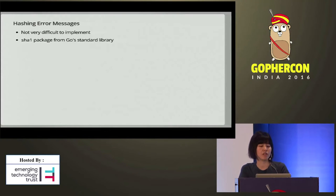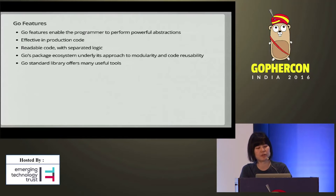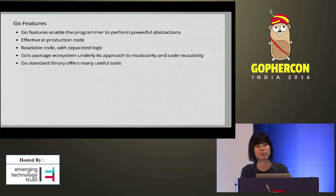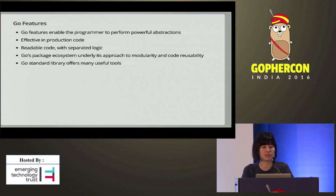These are not very complex but powerful abstractions which can be used effectively in production code. As a result, you get readable code and you separate your logic — you don't have to repeat the same code twice. Go's approach to packages and its package ecosystem also underlies its approach to modularity and code reusability. Its standard library also offers many tools. I think it's been enjoyable to see how Go has been used in production, and I think it's been effective in the way we use it in our production codebase. Thank you.